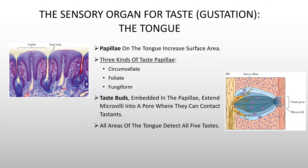The sensory organ for taste is the tongue. There are papillae on the tongue that increase the surface area, as you can see in the graphic on the left-hand side. There are three kinds of taste papillae: circumvallate, foliate, and fungiform. Taste buds are actually embedded in the papillae — you can see the taste buds down in the crevices of those papillae.